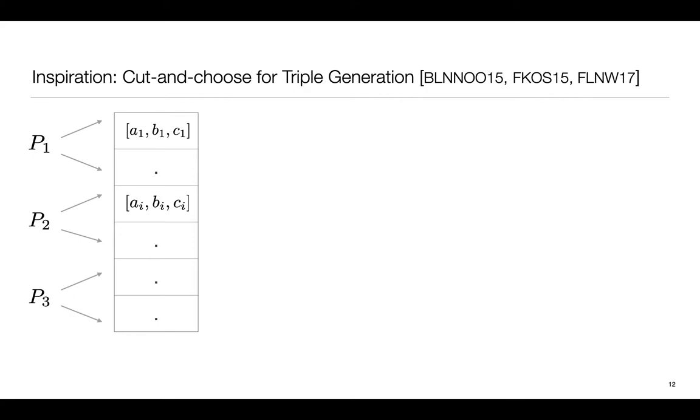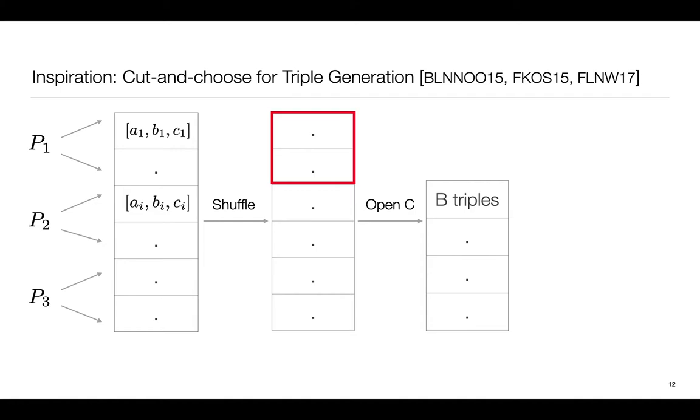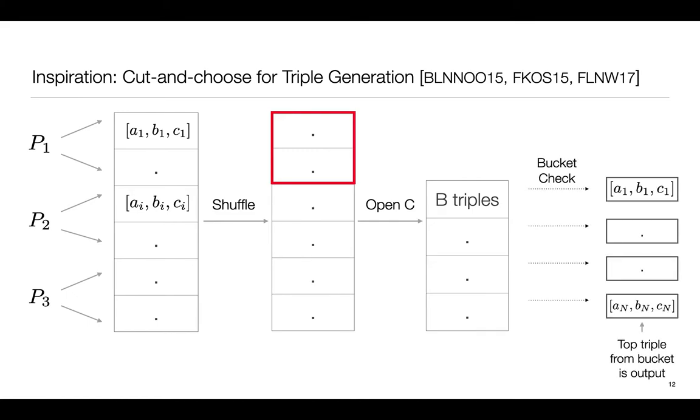Before going into the new Cut-and-Choose protocol let's recap the original Cut-and-Choose for multiplication triples over a field. First the parties propose a bunch of secret share multiplication triples which are then shuffled and C of them are opened and checked for correctness. If all of them are consistent the remaining triples are put in buckets of size B. Within each bucket the top triple is selected and a pairwise checking procedure is carried out with every other triple in the bucket. If all the checks pass the top triple is output from each bucket.